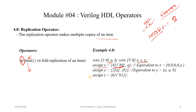For example, if G is a 6-bit variable, we can assign all 6 bits the value 1 using {6{1'b1}}. The replication operator is very useful when we need to initialize a very large vector with a constant value. Another example: assign Y = {B, {2{A}}}, where B and two copies of A are concatenated and assigned to Y.